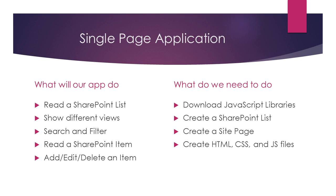Next we'll talk about our single-page application. Our application is going to read a SharePoint list — the IT request list shown earlier — show different views from the list, allow the user to search and filter results, read a SharePoint item, and allow you to add, edit, and delete SharePoint items. To make our single-page application work, we need to download the JavaScript libraries into the site assets library, create our SharePoint list, create a site page to host the application, and create HTML, CSS, and JavaScript files that compose our application — all hosted within the site page we create.